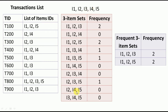Once we write the three-item sets, we count the frequencies. For I1-I2-I3, it appears here and here — it has been bought 2 times. We write 2 in the frequency column. After counting all possibilities, we identify the frequent three-item sets — those satisfying the minimum support of 2. In this case, only I1-I2-I3 and I1-I2-I5 satisfy the requirement, both with frequency 2, so these are the frequent three-item sets.